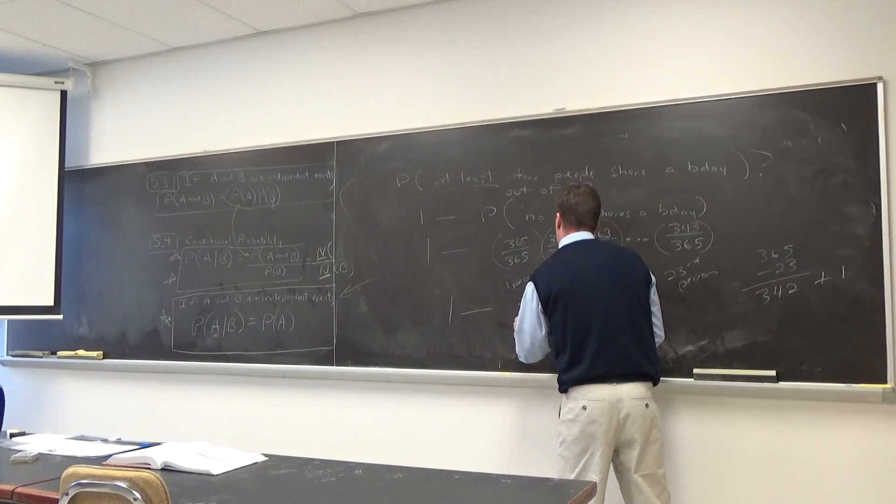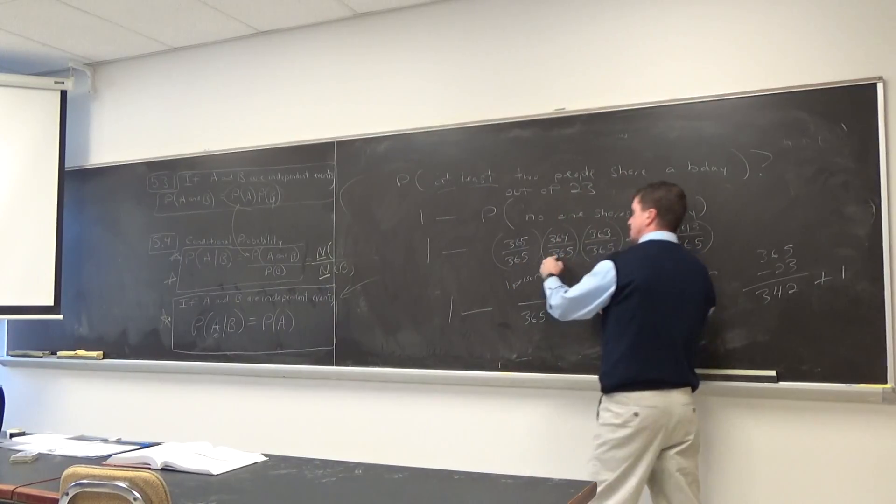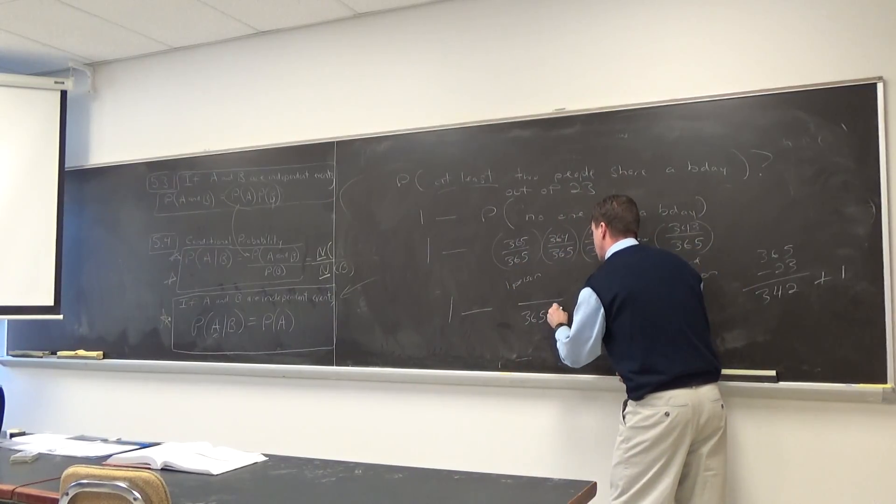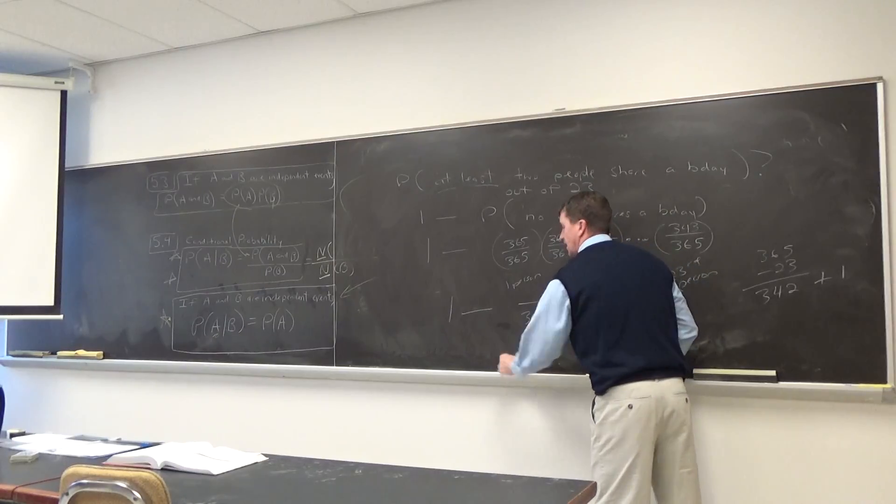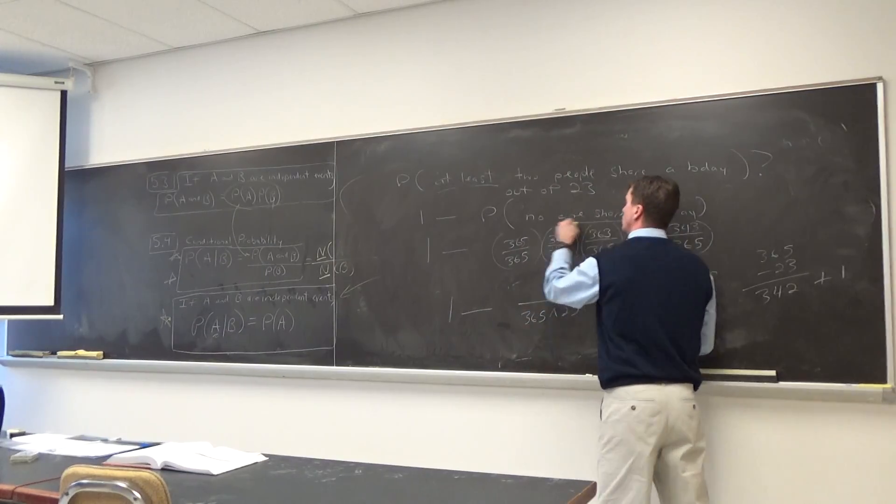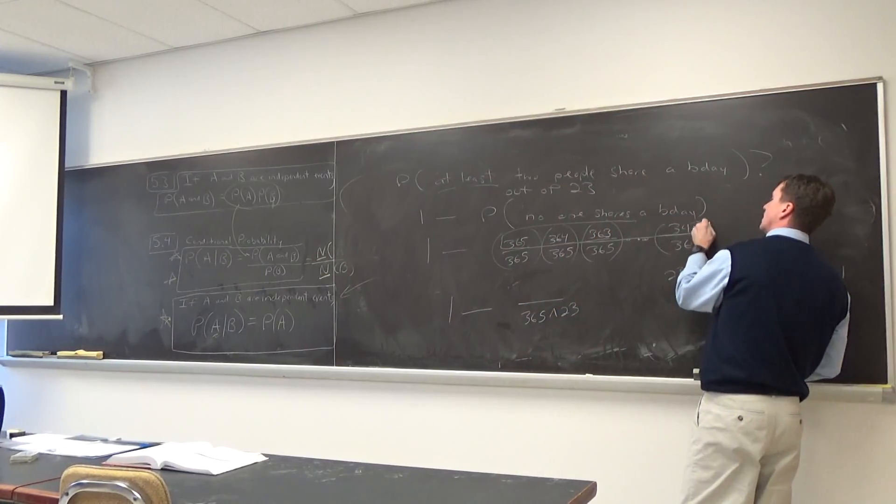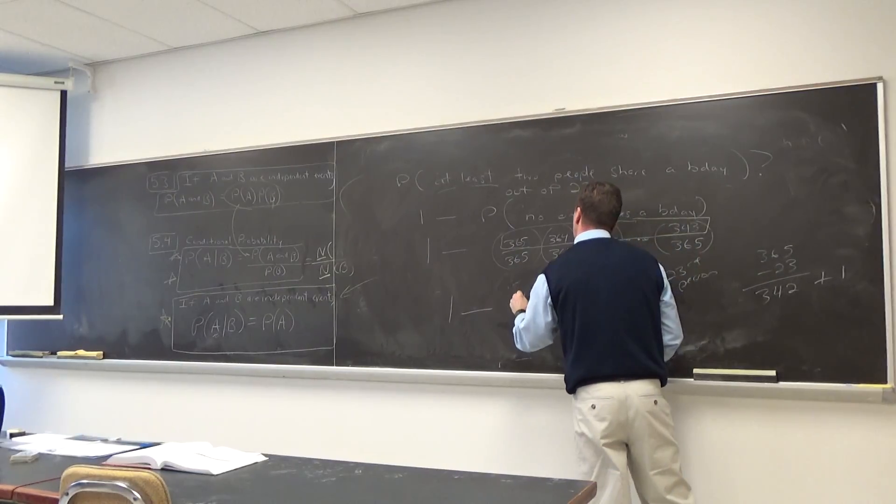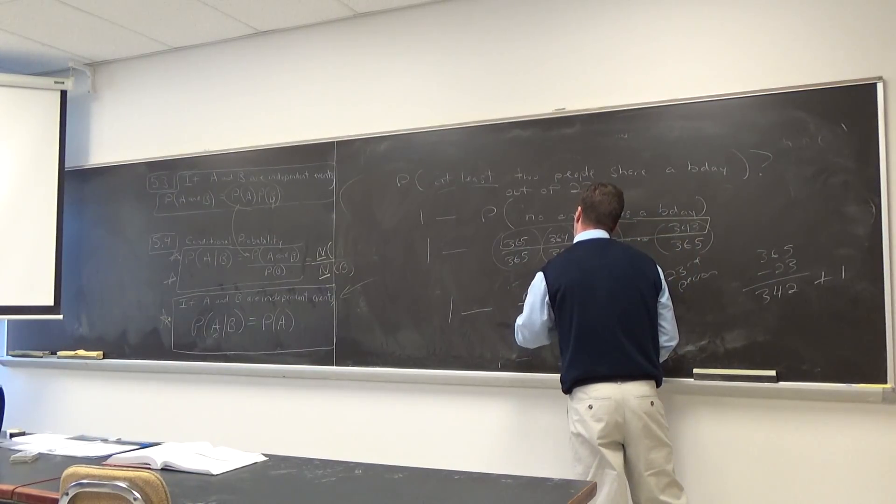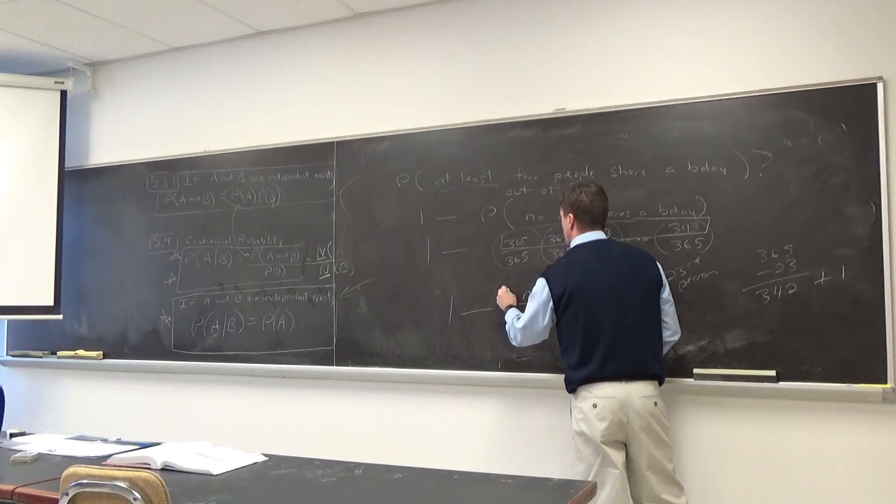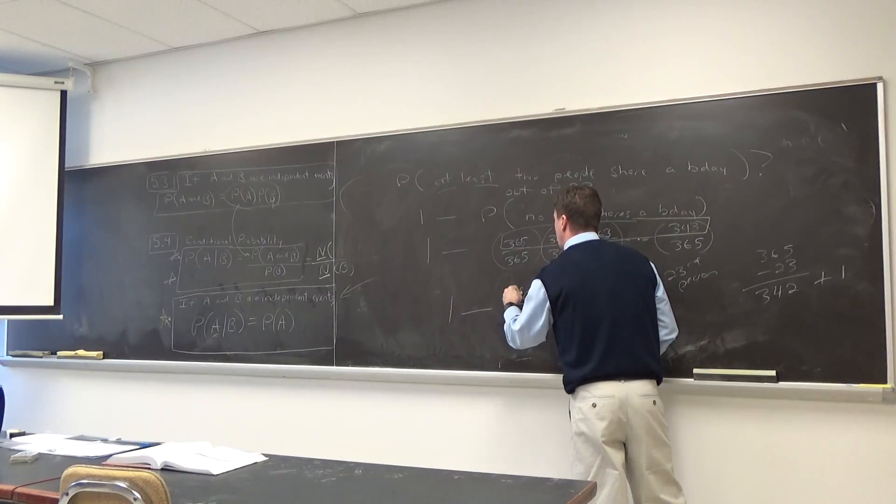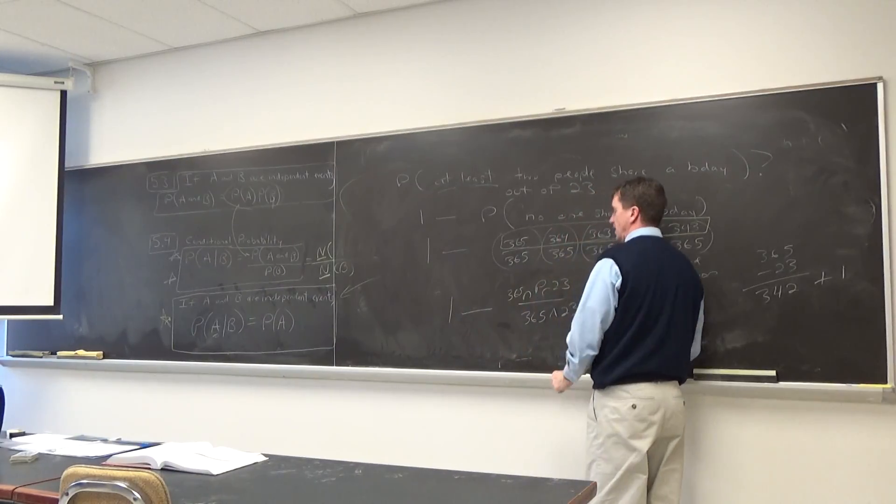there's an easy way to do the denominator on the calculator. Isn't that 23, 365 is multiplied together? But I want to give you a cool button on the calculator that does the numerator. What would do all this numerator math right here fast on the calculator? There's a button called NPR, and I'm going to hit that. I'm just going to hit 365 NPR 23. It's called a permutation button.